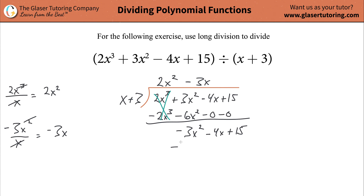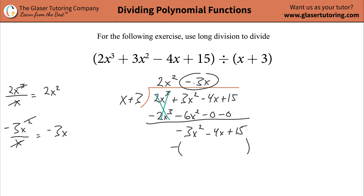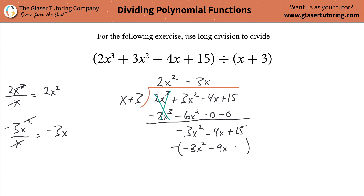Now do the same process: subtraction symbol, parentheses, and do your distribution. Take this, including the negative sign, and distribute it to each of those terms. So the first one is going to be negative 3x squared — and if you did it right, they should match, including the signs. Then take negative 3x, multiply it by positive 3, so that should be negative 9x. Since you have nothing left, just plug in a zero.